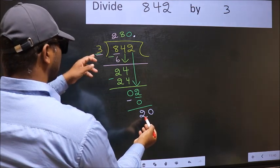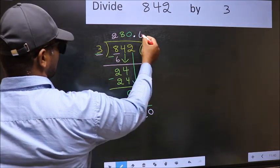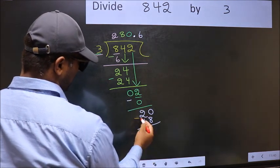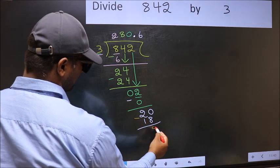A number close to 20 in 3 table is 3 times 6, which is 18. Now you should subtract. 20 minus 18 is 2.